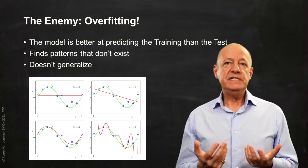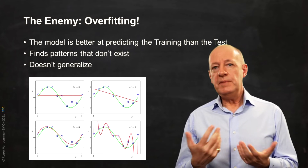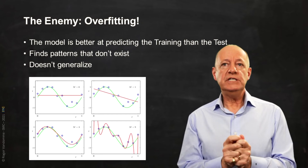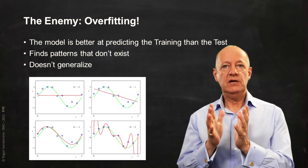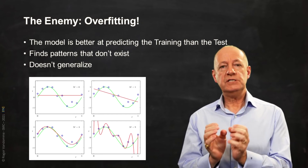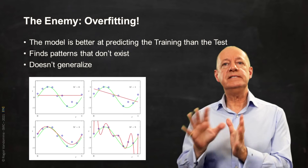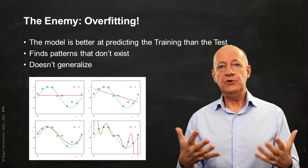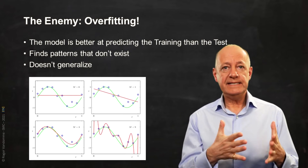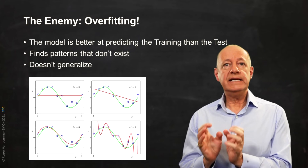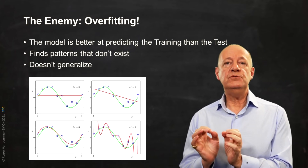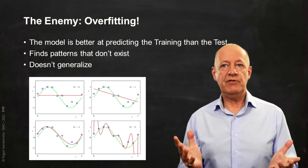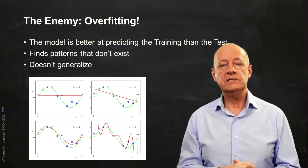To avoid overfitting, there are many methods. The most common is, from the beginning of the project, to set aside a test sample. Once the model is completed, it will be tested with observations that have not been used in its development. Any desire for overfitting will then normally be detected.